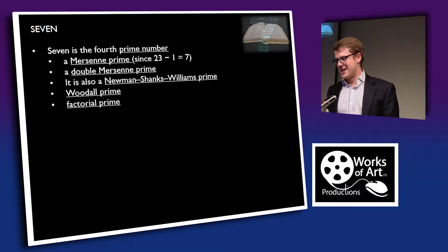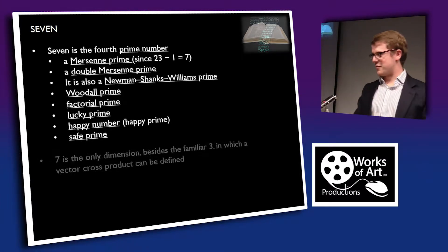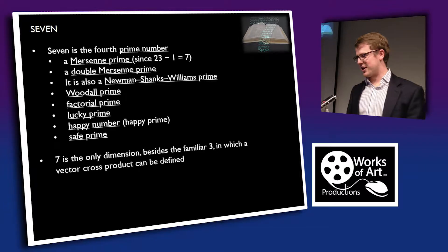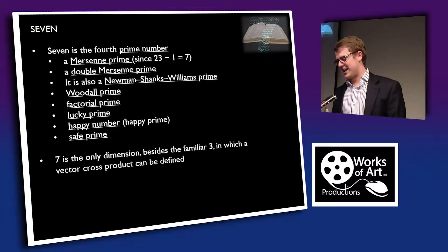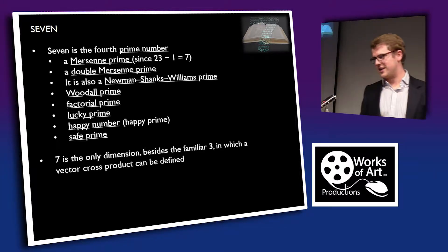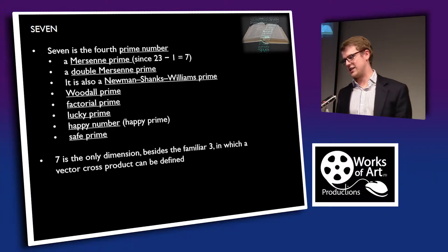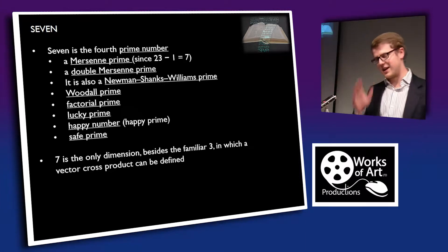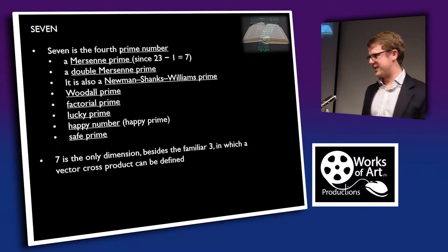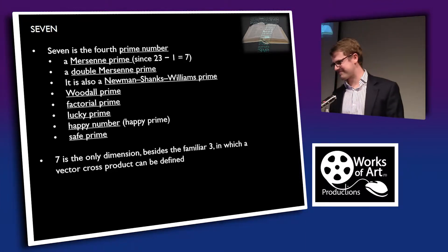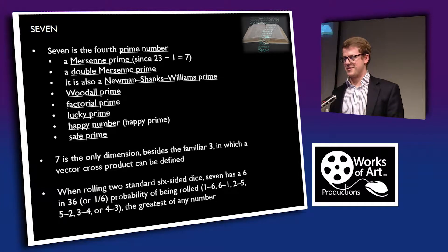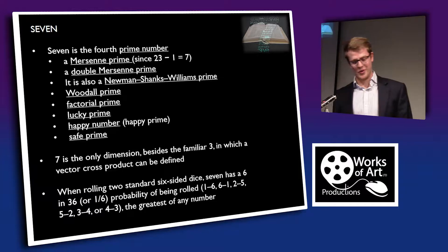This one I found a little bit more useful when playing games at home: if you're using two dice, the probability of getting seven is the highest, being one in six — or one in thirty-six. So if you've got an important roll, bear that in mind. It's quite helpful.